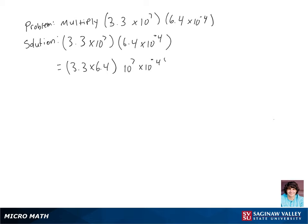Now we're going to multiply all the numbers inside the parentheses. So for the first set, we're going to be left with 21.12, and for the second set, we're going to be left with 10 to the 3rd power.